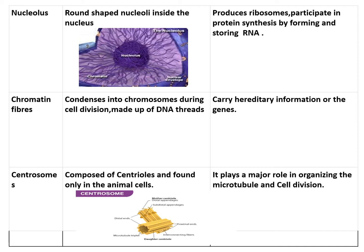Next is the centrosome, which is composed of centrioles and is only found in animal cells. A region surrounds the centrioles, located very near to the nucleus, and the centrioles are surrounded by radiating microtubules. During cell division, they form a star or aster shape. The function of centrosomes is that they play a major role in organizing the microtubules and in cell division.